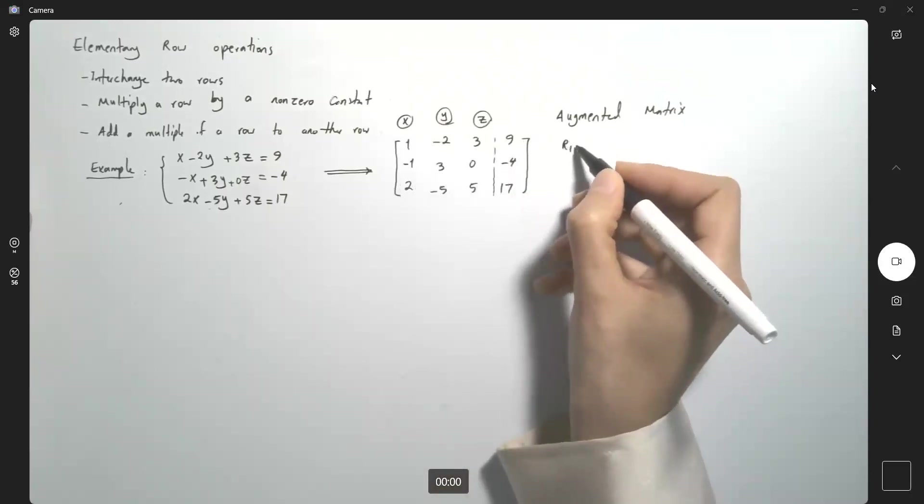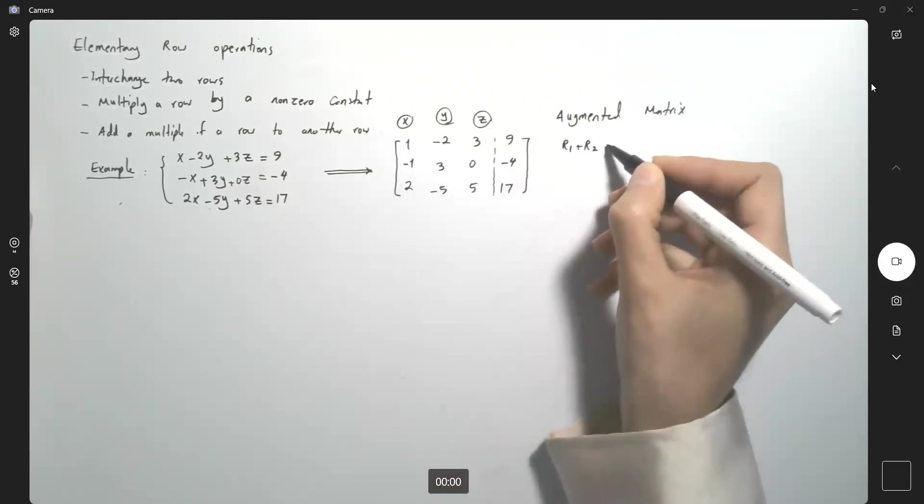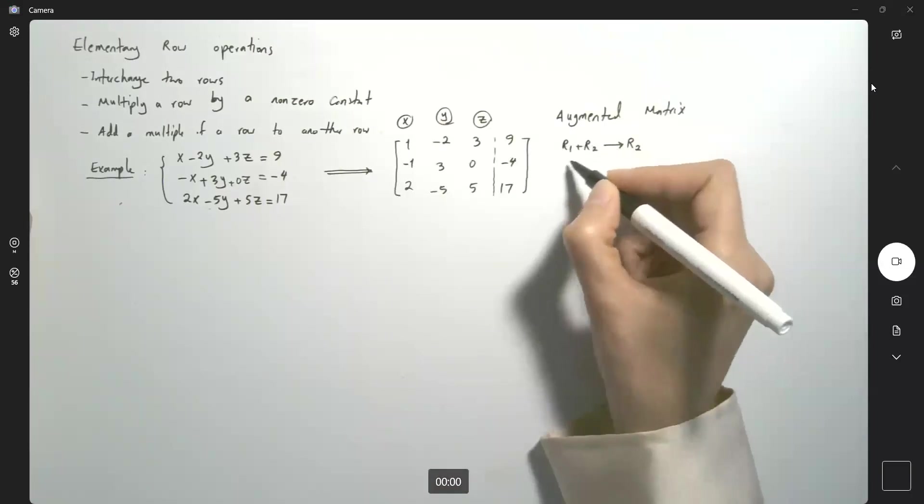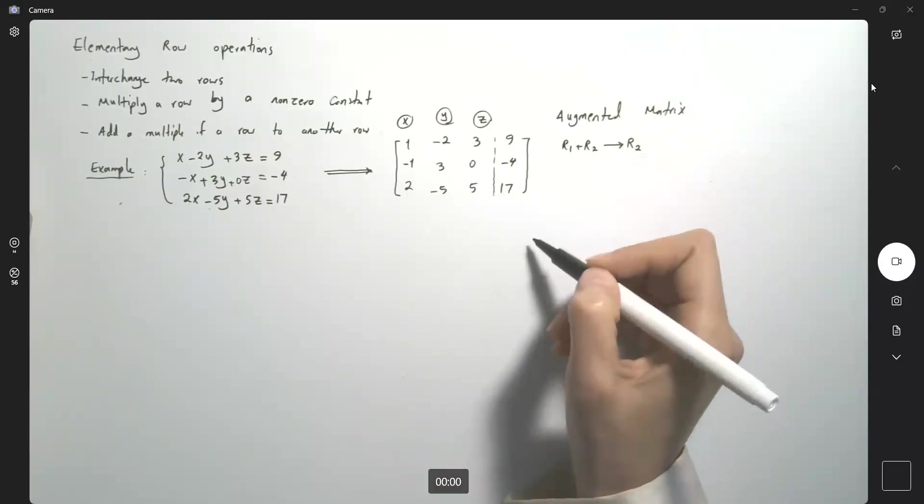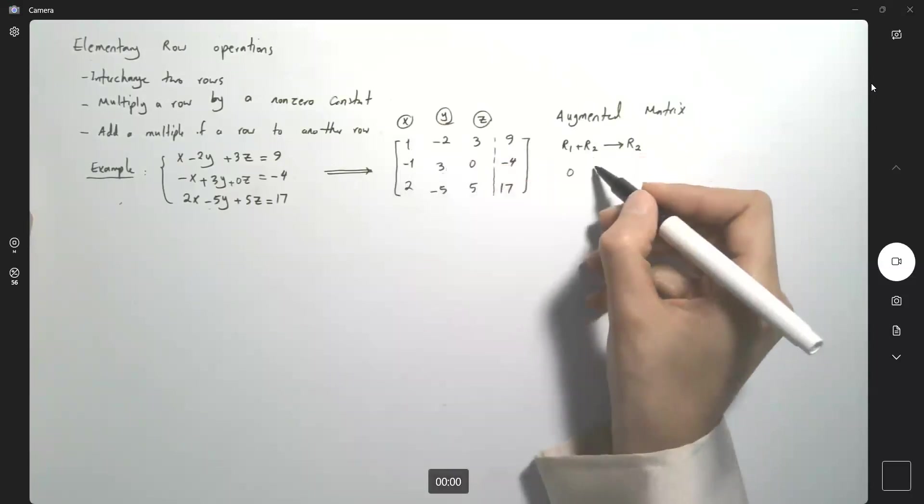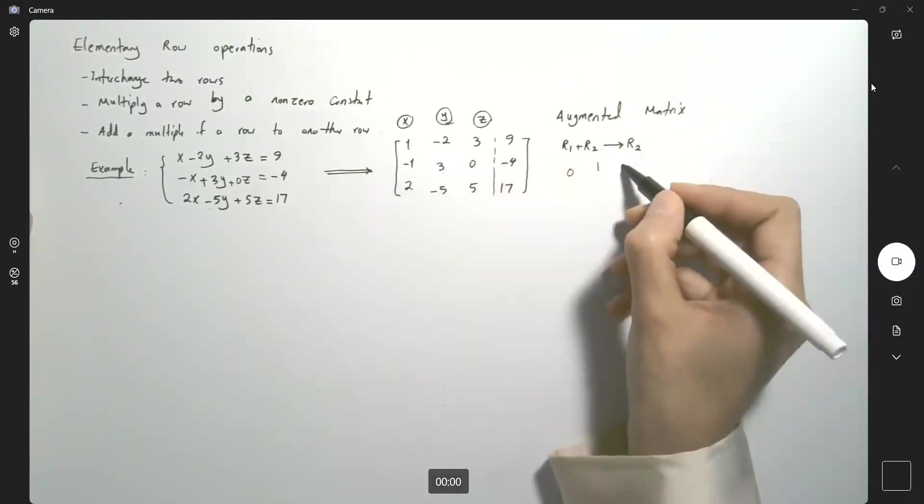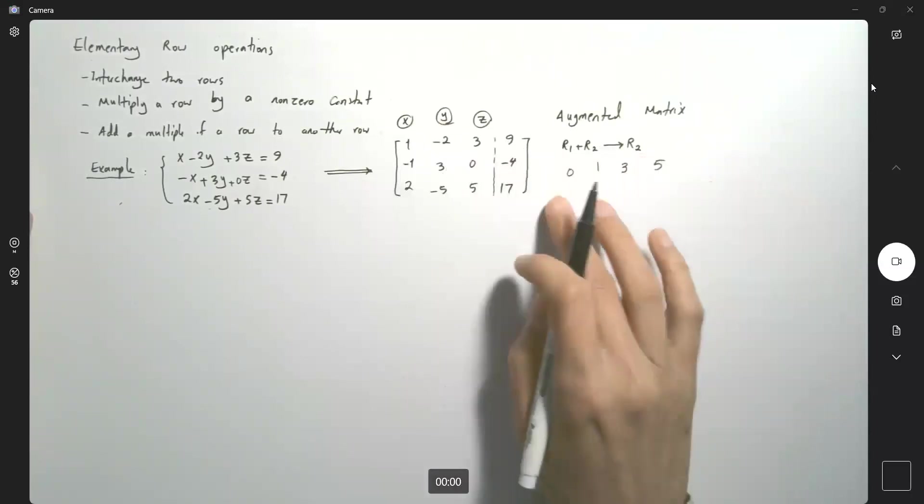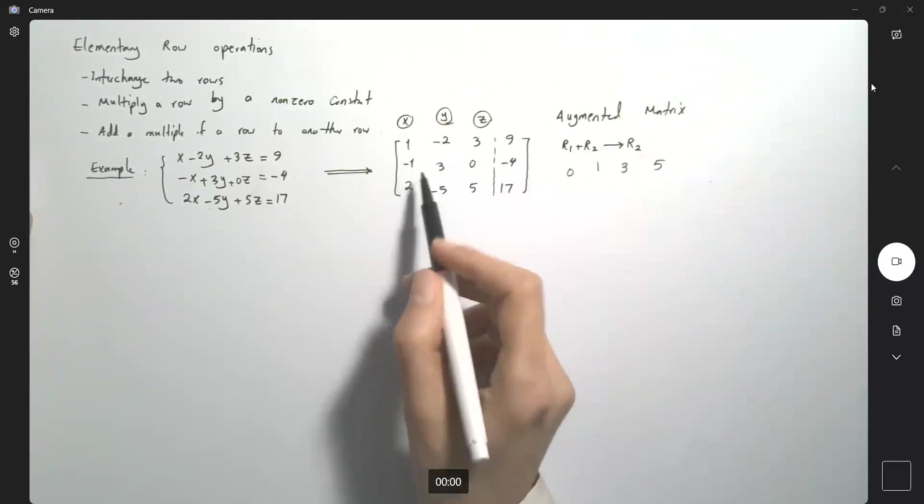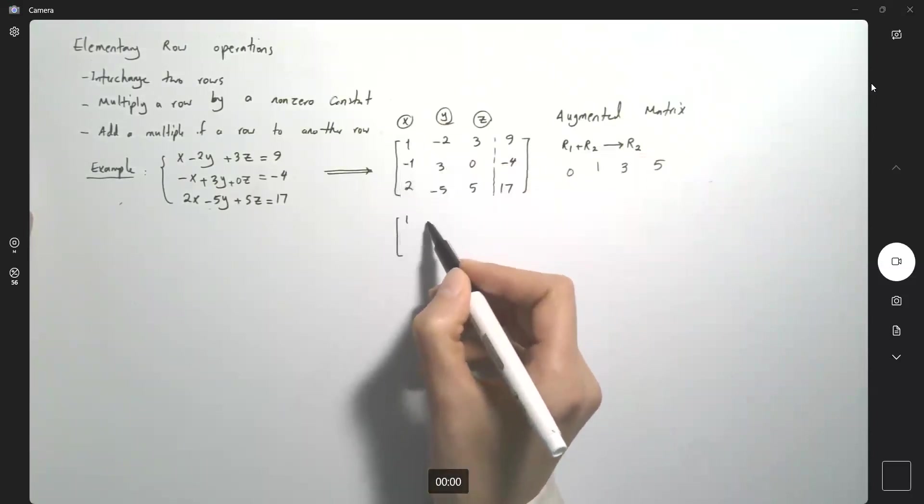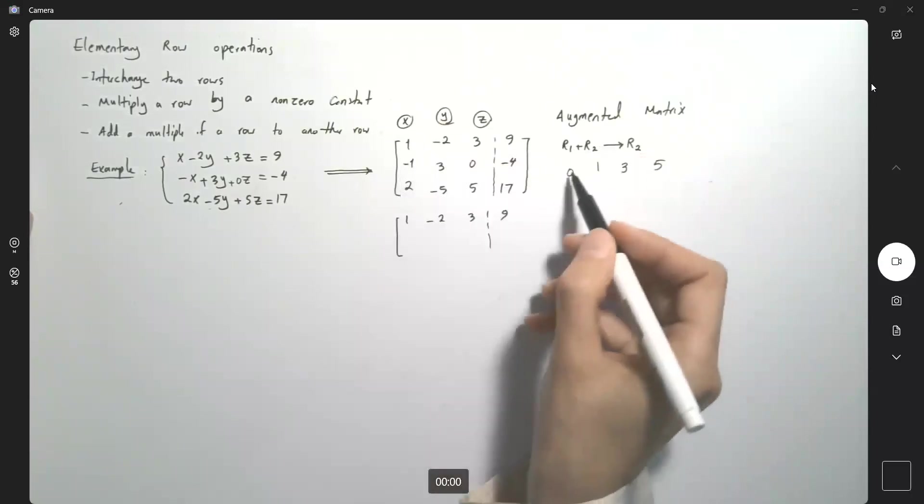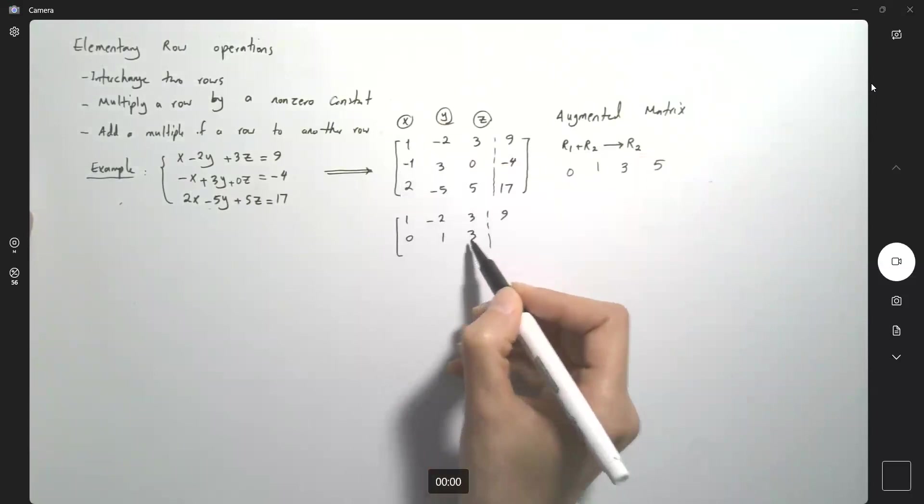So let us do that. R1 plus R2. And then we're going to replace R2 by this new element. Here you have 0, then you have 1, then you have 3 and 5. And this new row will replace your second row. So this becomes 1, negative 2, 3 and 9. And here you have 0, 1, 3, 5.